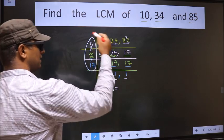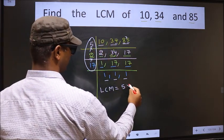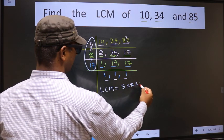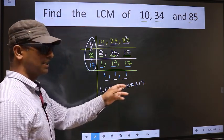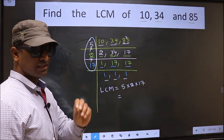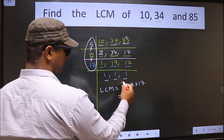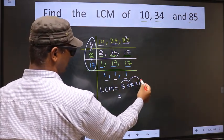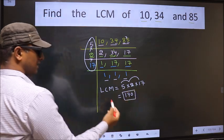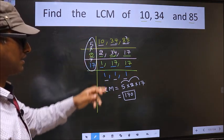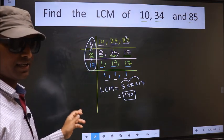That is 5 into 2 into 17. Let us multiply these numbers: 5 into 2 is 10, 10 into 17, 117 is our LCM. Am I clear?